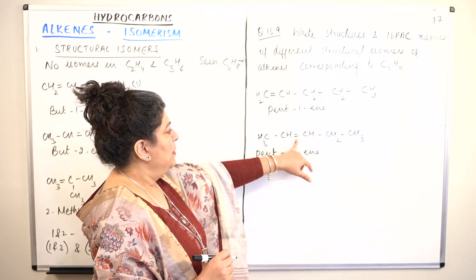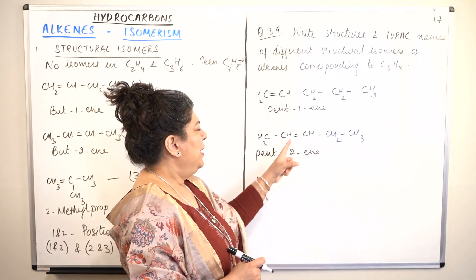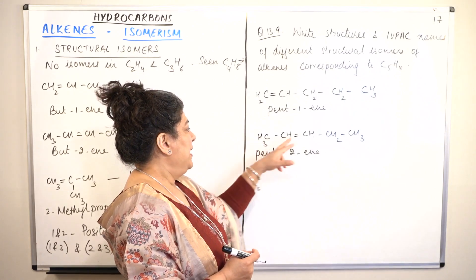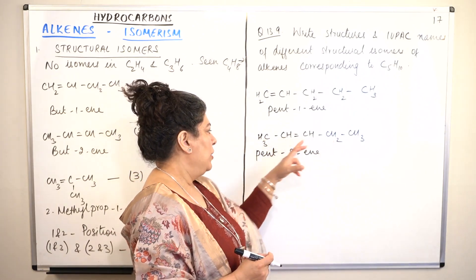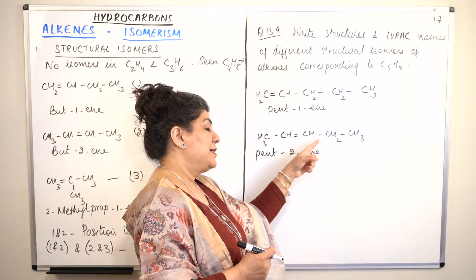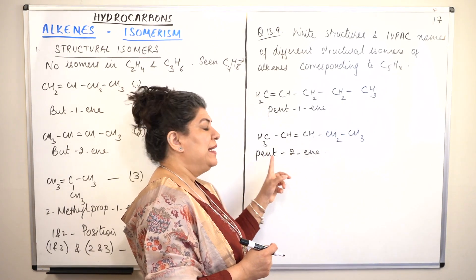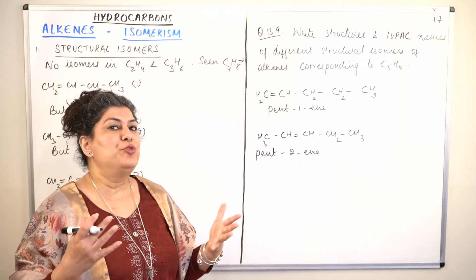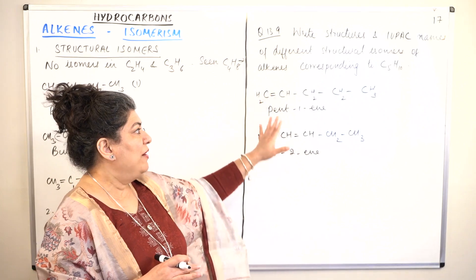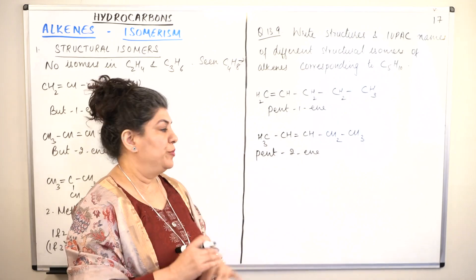If I shift the double bond further, I might call it pent-3-ene, but that would be wrong — because counting from the other direction, this becomes the second carbon, giving pent-2-ene again. So that is not a new isomer. With straight-chain pentene, we have only two position isomers: pent-1-ene and pent-2-ene.